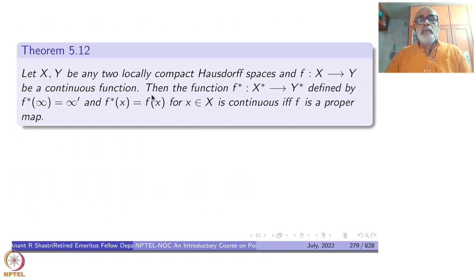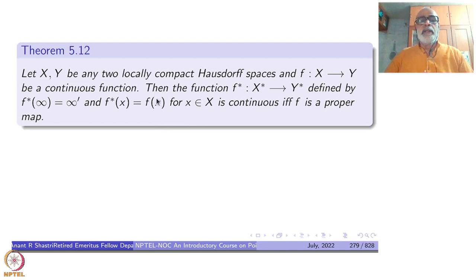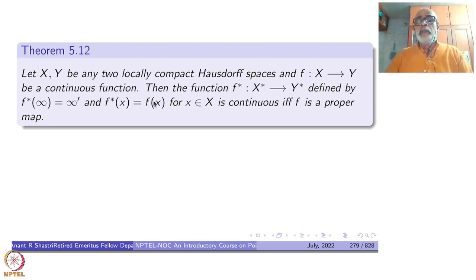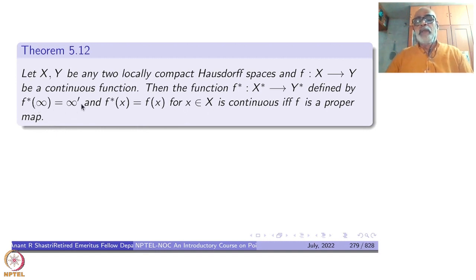Here is a theorem explaining why we study proper maps in the context of one-point compactification. Let X and Y be any two locally compact Hausdorff spaces. Let f from X to Y be a continuous function. Then the function f-star from X-star to Y-star, defined by f-star of infinity equals infinity-prime, uses two infinities: one is infinity and another is infinity-prime.